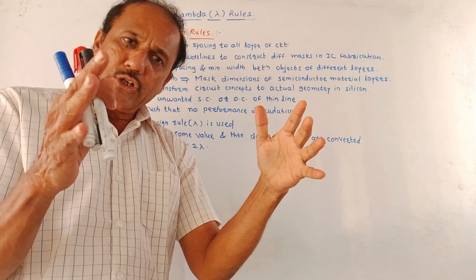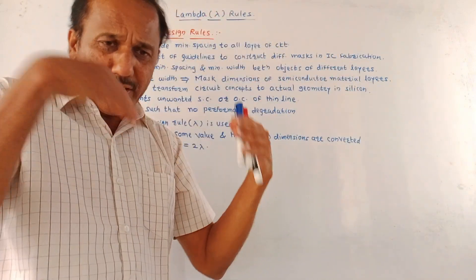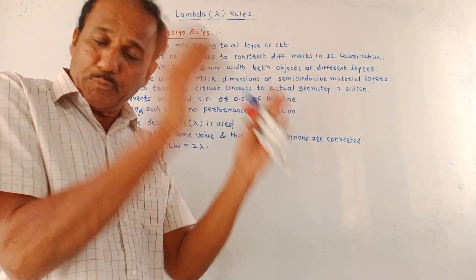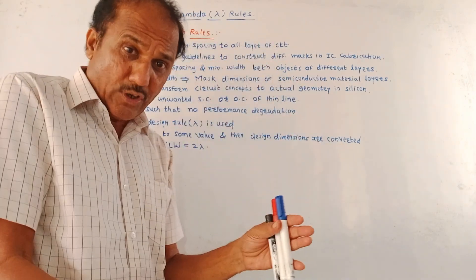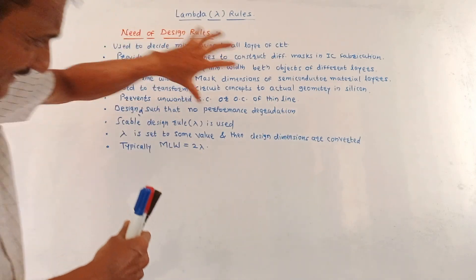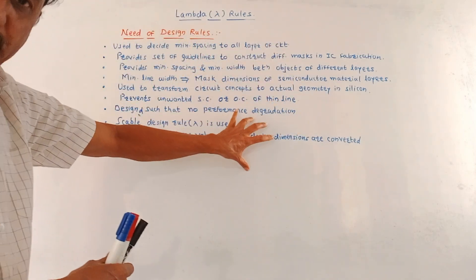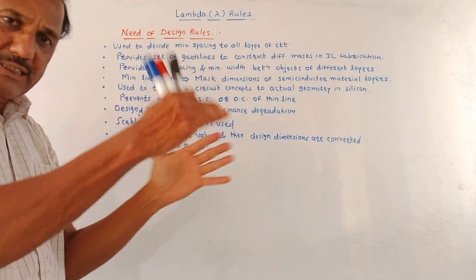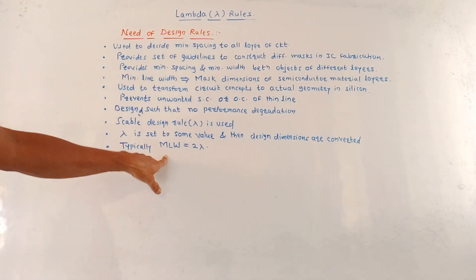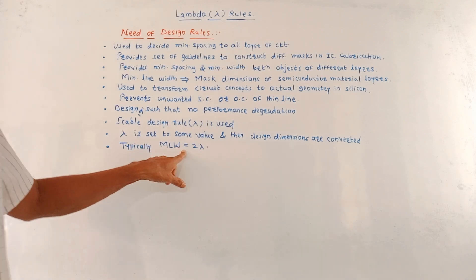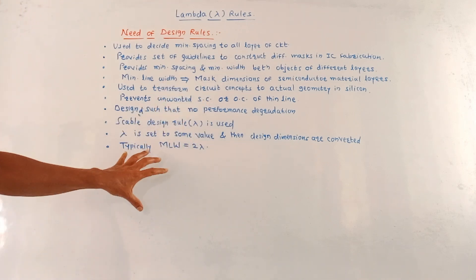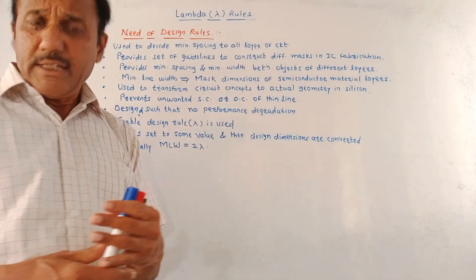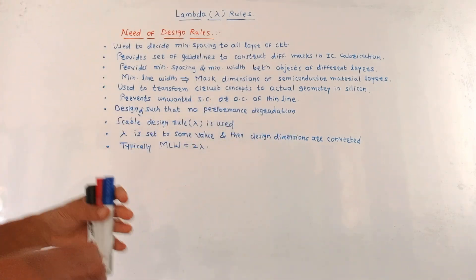Lambda is set to some value, and then all dimensions — like the gap between two layers, the spacing between a contact and a polysilicon layer, and so on — are expressed in terms of the lambda parameter. The typical minimum line width (MLW) is 2 lambda. This is the typical value used in design. This concludes the necessity of design rules for IC fabrication.